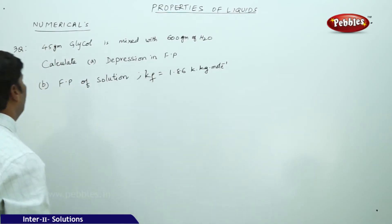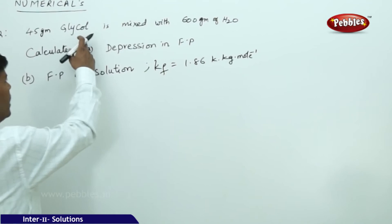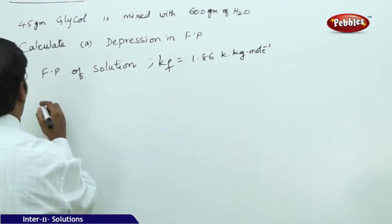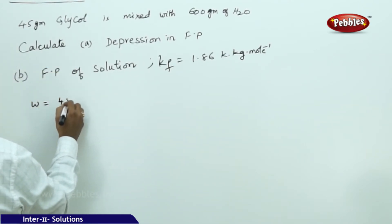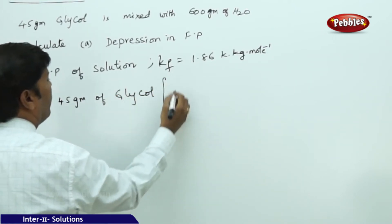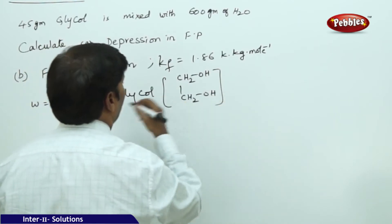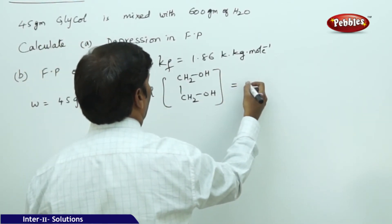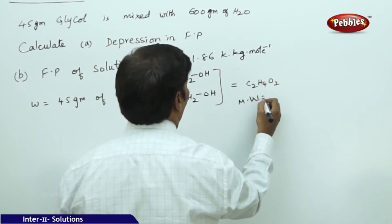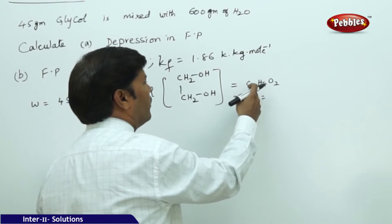The next numerical: 45 grams of glycol is mixed with 600 grams of water — calculate the depression in freezing point. Here w = 45 grams of glycol. The structural formula of glycol is CH₂OH–CH₂OH, so its molecular formula is C₂H₄O₂.